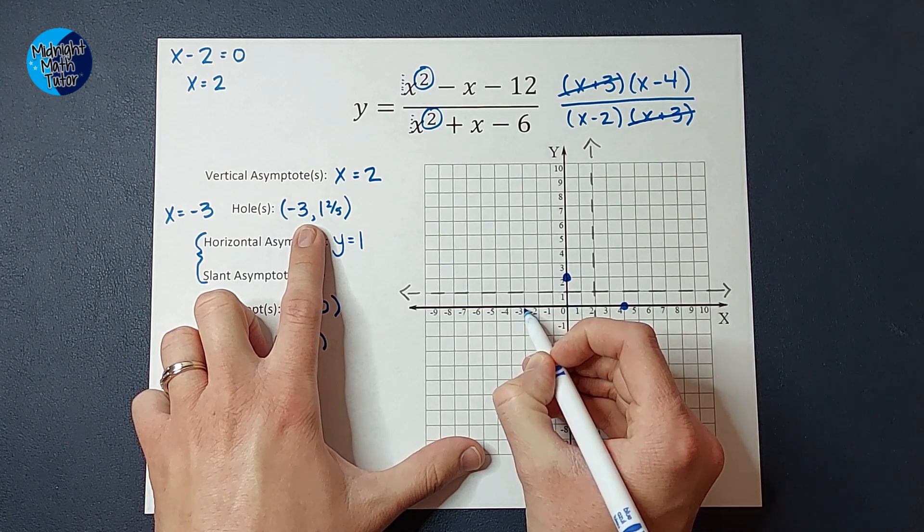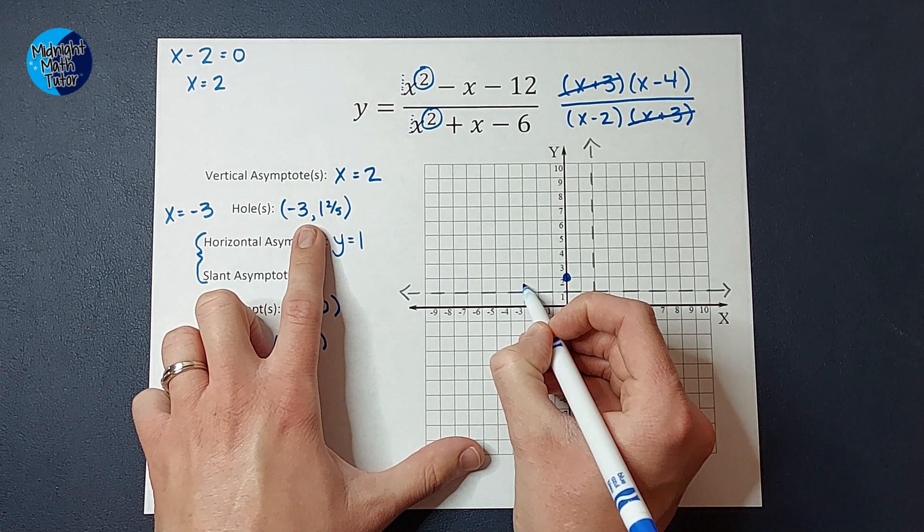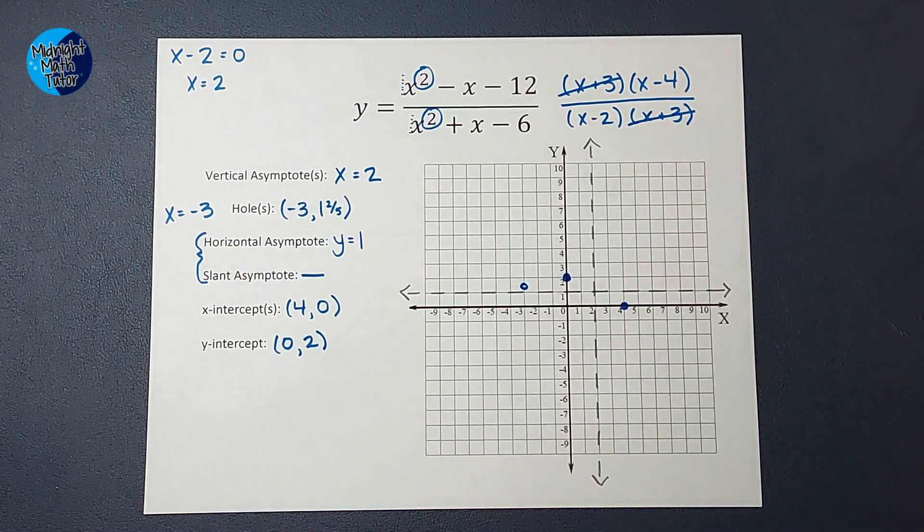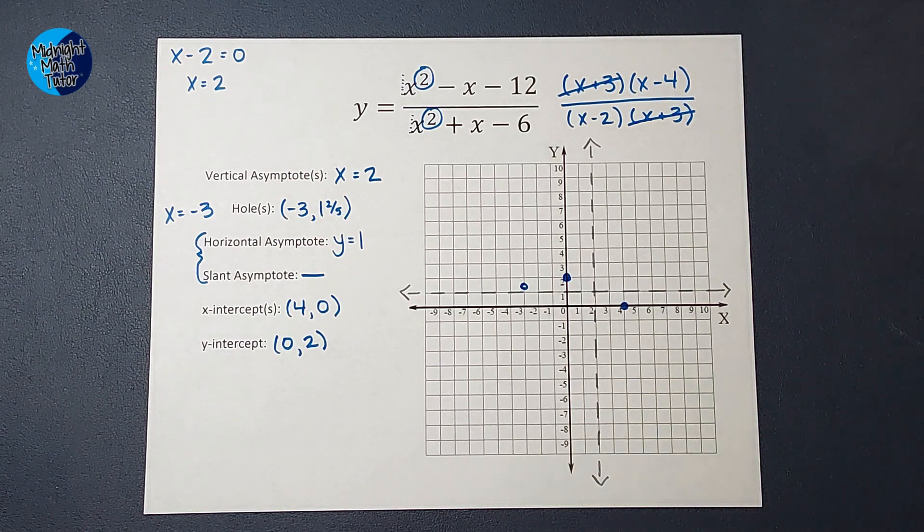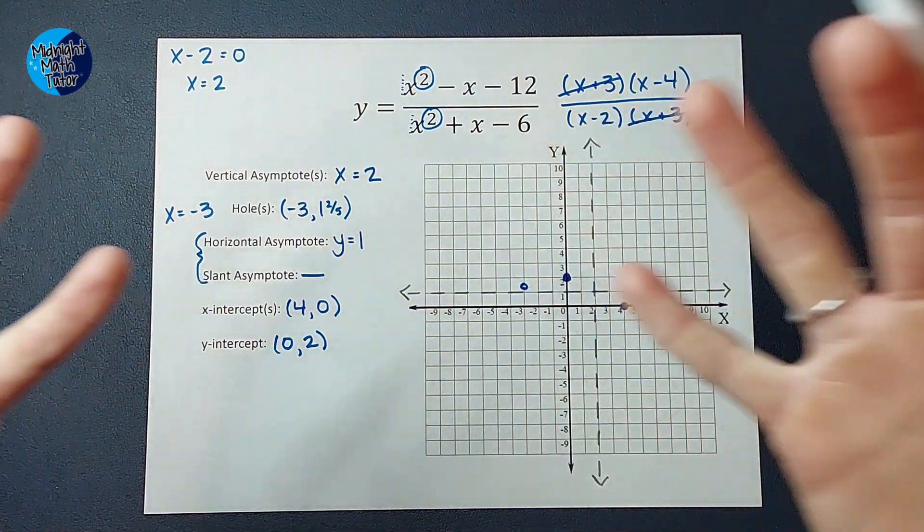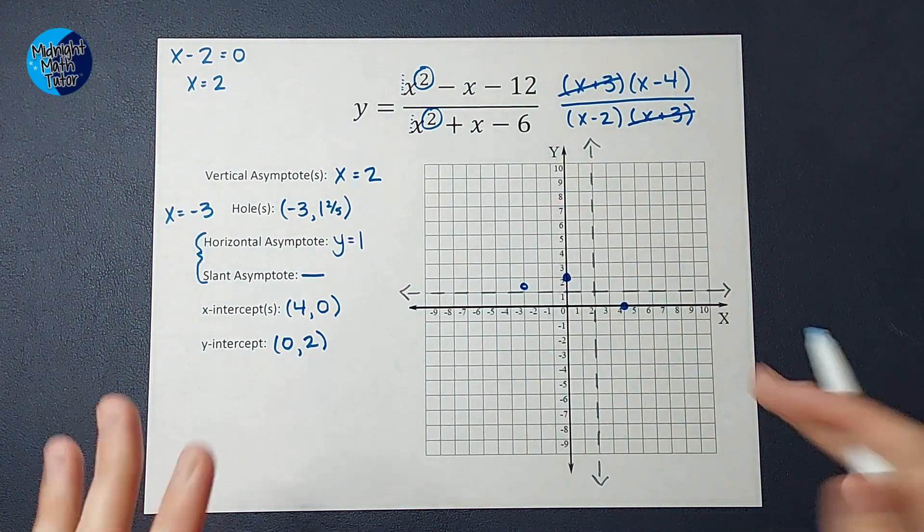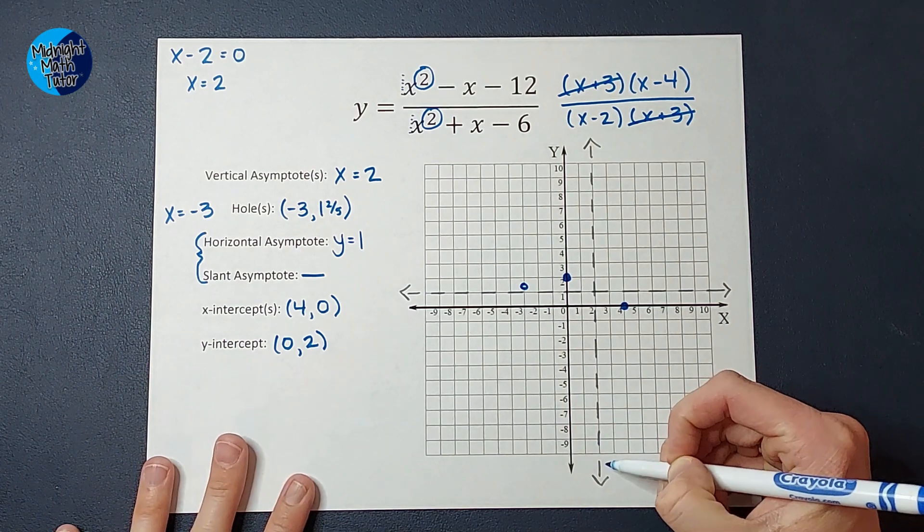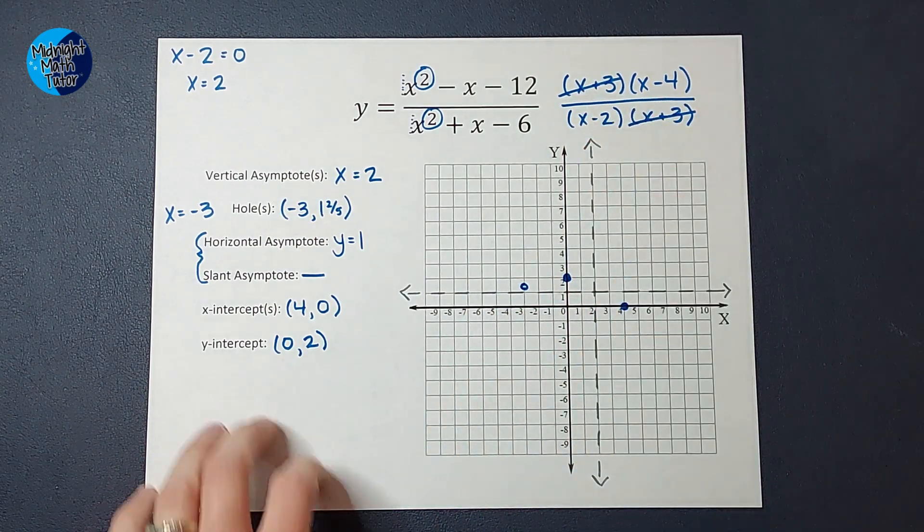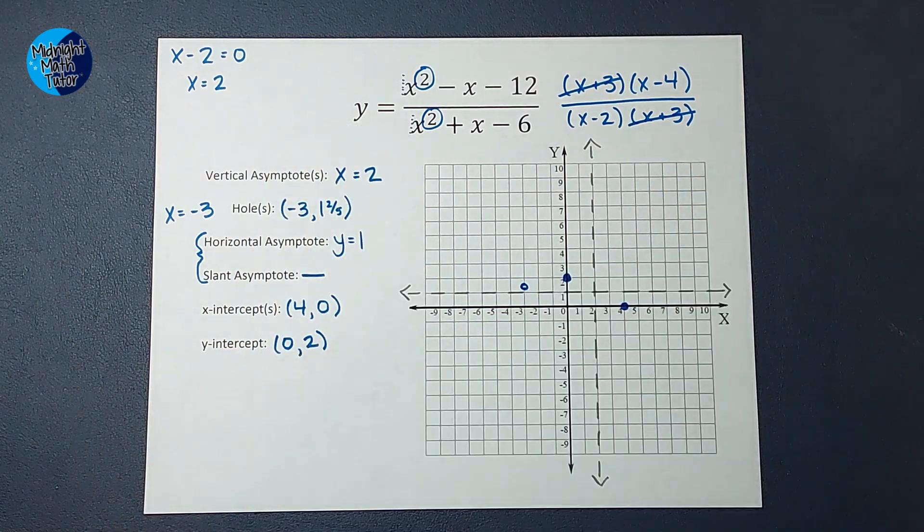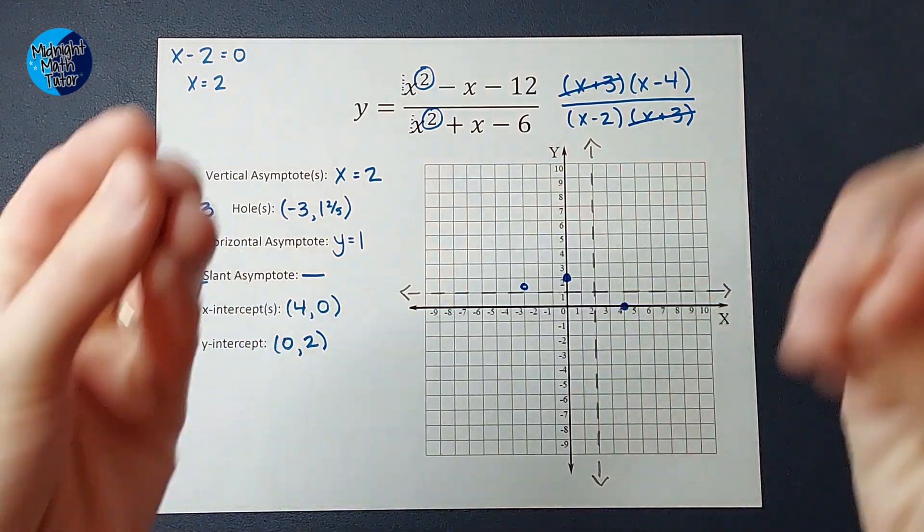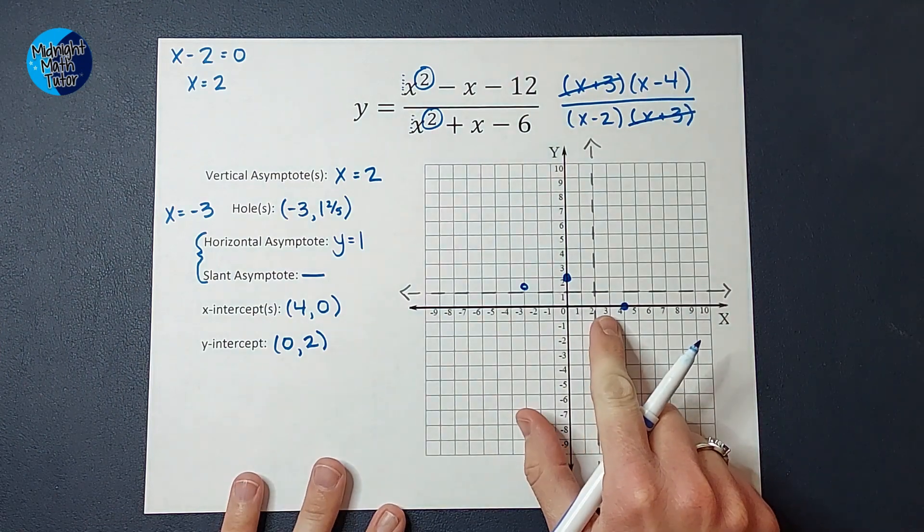And then this is a good time to graph this hole. So I know at negative three, one and two fifths, it doesn't have to be perfect, right? Approximately here. I'm going to draw an open circle, which represents that there is a hole in my graph right there. All right. From here, this is kind of depending on how many times you've graphed. After you graph a lot of these, you'll probably be able to kind of figure out what this graph is doing. Knowing what you know about asymptotes and functions and things, you'll probably be able to tell, okay, this is going to go like this on this side and like this over here. Right. If you're to the point where you're like, oh yeah, I know that's what it's going to do. Go for it. And then check it on your graphing calculator.